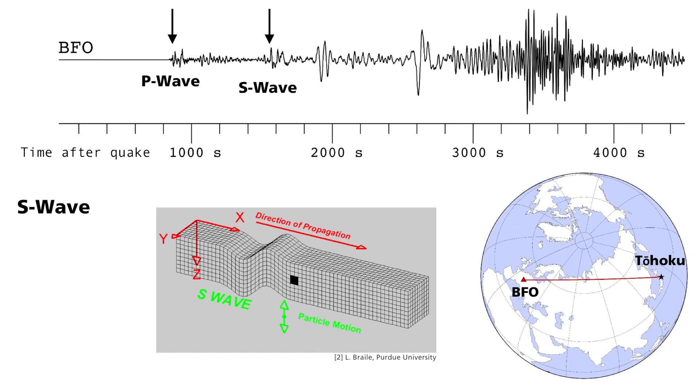In the animation, the movement is shown schematically upwards and downwards. However, it also takes place to the right and the left. S waves generally oscillate slower than P waves.